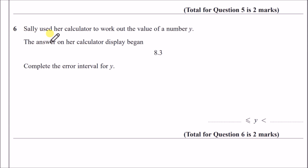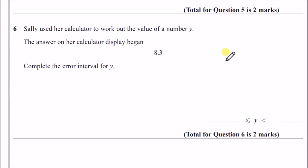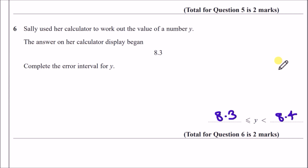Question 6: A calculator display began with 8.3 followed by more digits. Complete the error interval for Y. The number could have been 8.3125, 8.3967, and so on. The smallest possible value is 8.3, and the highest possible value approaches 8.3999... So the error interval is 8.3 ≤ Y < 8.4, because anything less than 8.4 will give us 8.3 something.